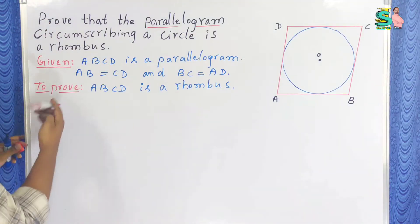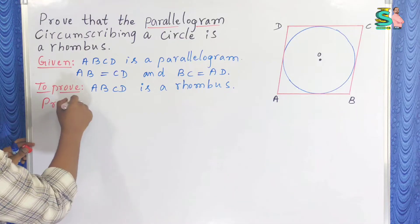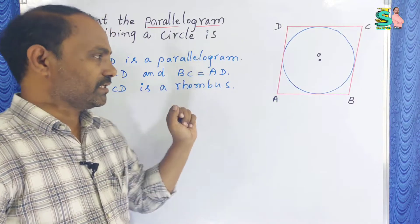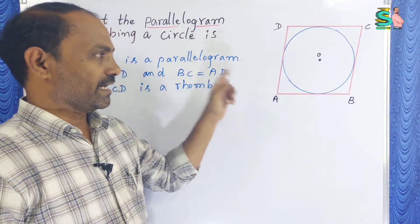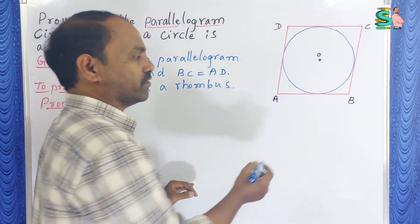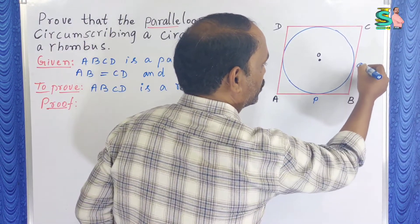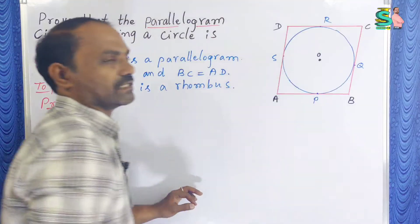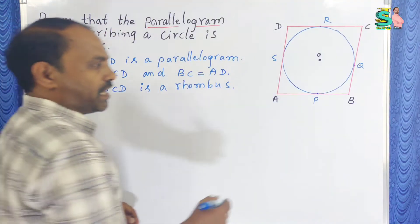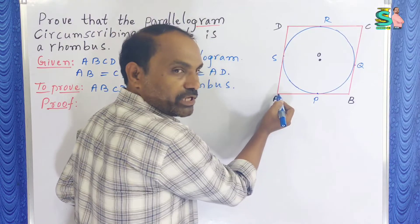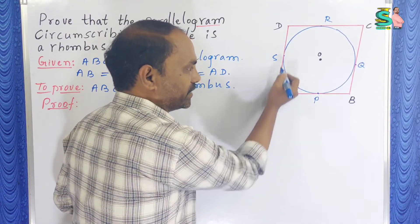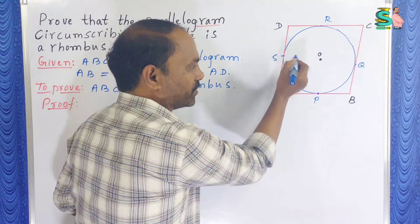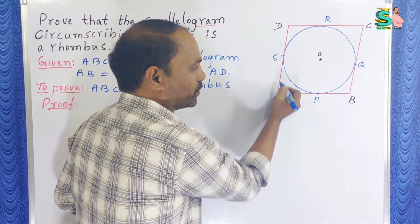Now for the proof: ABCD is a parallelogram and a circle touches all four sides. We label the four points of contact as P, Q, R, and S. Now from point A, AP and AS are two tangents drawn from external point A. So AP is equal to AS.